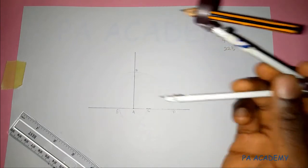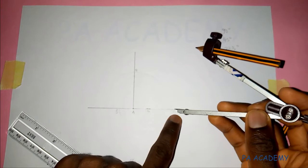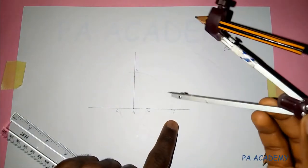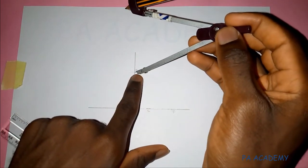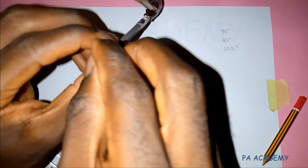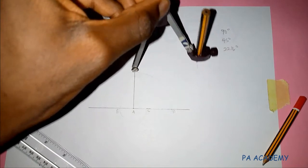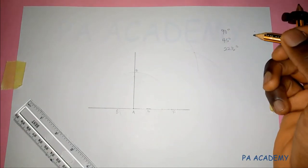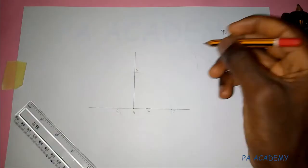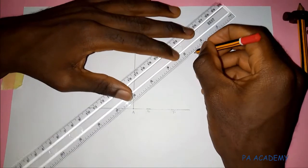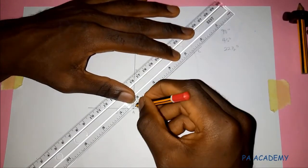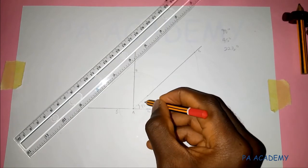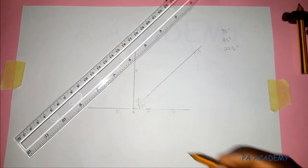With your compass again at any convenient length, from point F you draw an arc. With the same length — make sure you don't adjust it — come to point E and draw another arc. Where these two arcs meet, let's call this point G. Draw a line straight down to point A. With that we've been able to get our angle 45 degrees. This is also angle 45 degrees because we've just divided angle 90 into two.